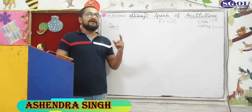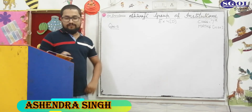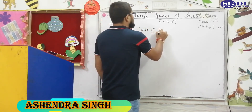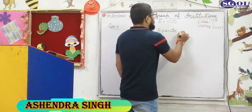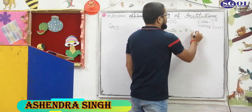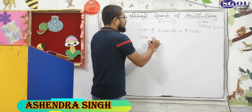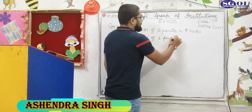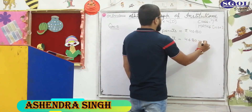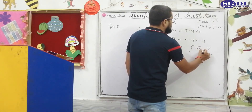Whenever you are supposed to find the value or the cost of one item, you are always supposed to think of division. So let's proceed with question number 5. We write: cost of 8 pencils is equal to Rs. 46.80. Then you have to find the cost of one pencil. Cost of one pencil would be 46.80 divided by 8. We will be doing division of 46.80 by 8.